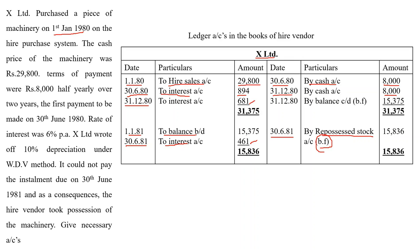So that covers how to calculate hire purchase ledger accounts — in the books of the higher purchaser and higher vendor — when there is default and complete repossession. The next concept is partial repossession, for which I have uploaded another video with the link in the description box. Hope you found this video useful. Thank you for watching.